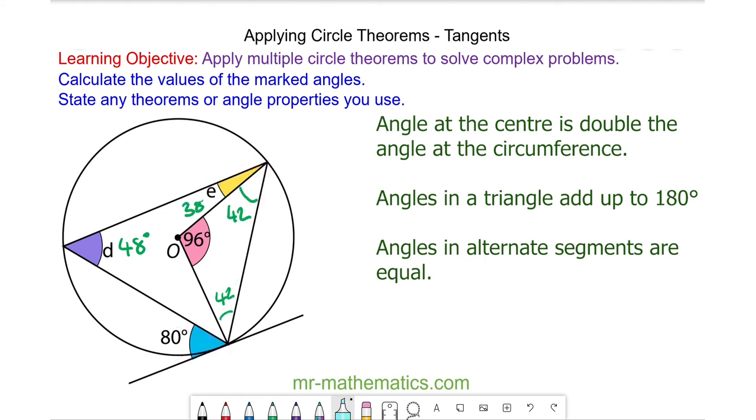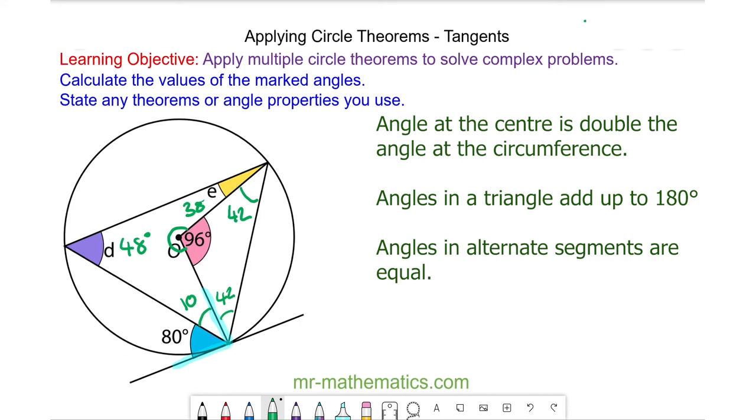We can check that this is correct because here we have a tangent and a radius which is perpendicular, so this angle will be 10 degrees. The angle at the center here will be 360 take away the other three interior angles, which is 264 degrees.